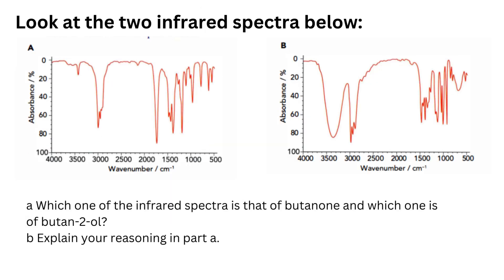Look at the two infrared spectra below. Which one of the infrared spectra is that of butanone and which one is that of butan-2-ol? Explain your reasoning in part A.